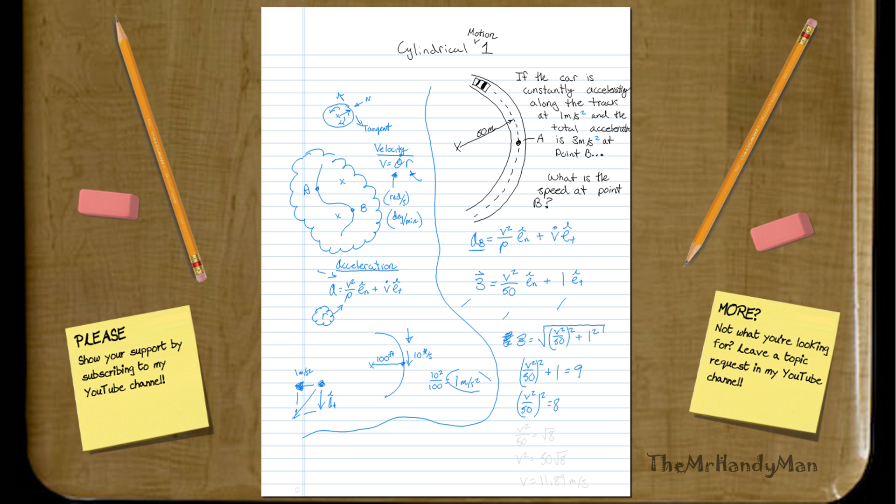V squared equals 50 times the square root of 8, which, when we do the square root of that, we will find that V will equal 11.89 meters per second.